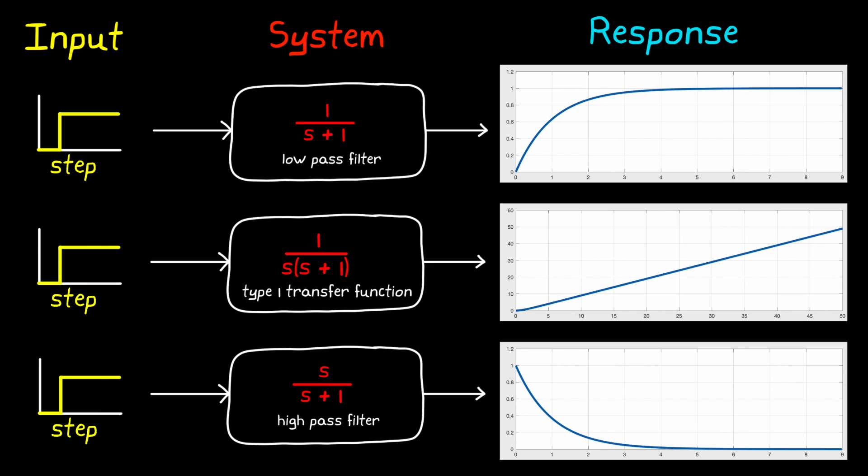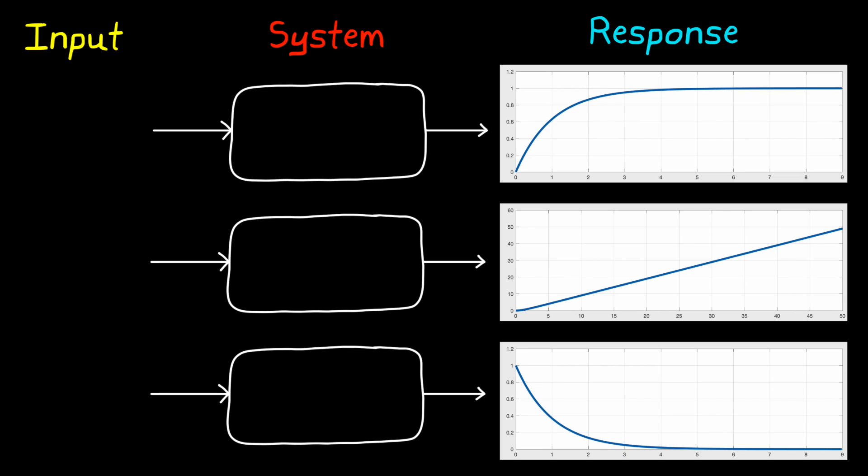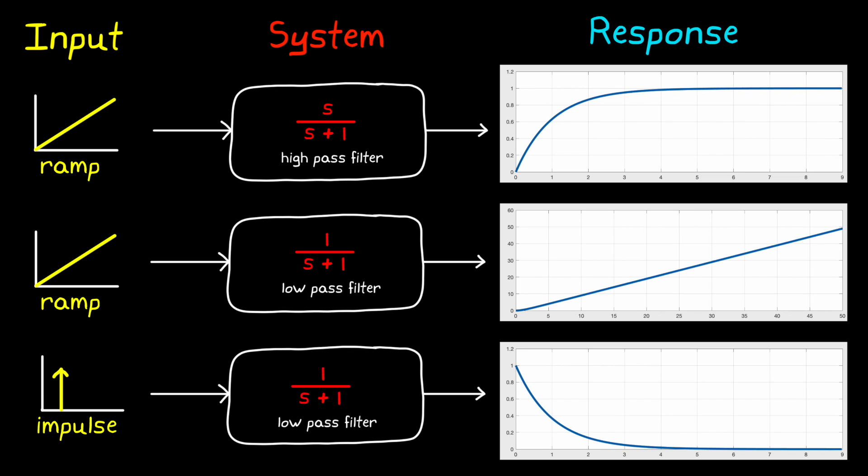So a step input doesn't necessarily mean it's going to create a response that also looks like a step. And to complicate things a bit more, each of these plots could be generated by non-step inputs. For example, this first plot could also be the ramp response of a high pass filter. And the second plot could also be the ramp response of a low pass filter. And this third plot could also be the impulse response of a low pass filter. So the thing I want you to take away from this is that we can't tell just by looking at the output alone whether we're looking at a step response or something else. We have to know that the input was a step, or we have to know the dynamics of our system to be certain.